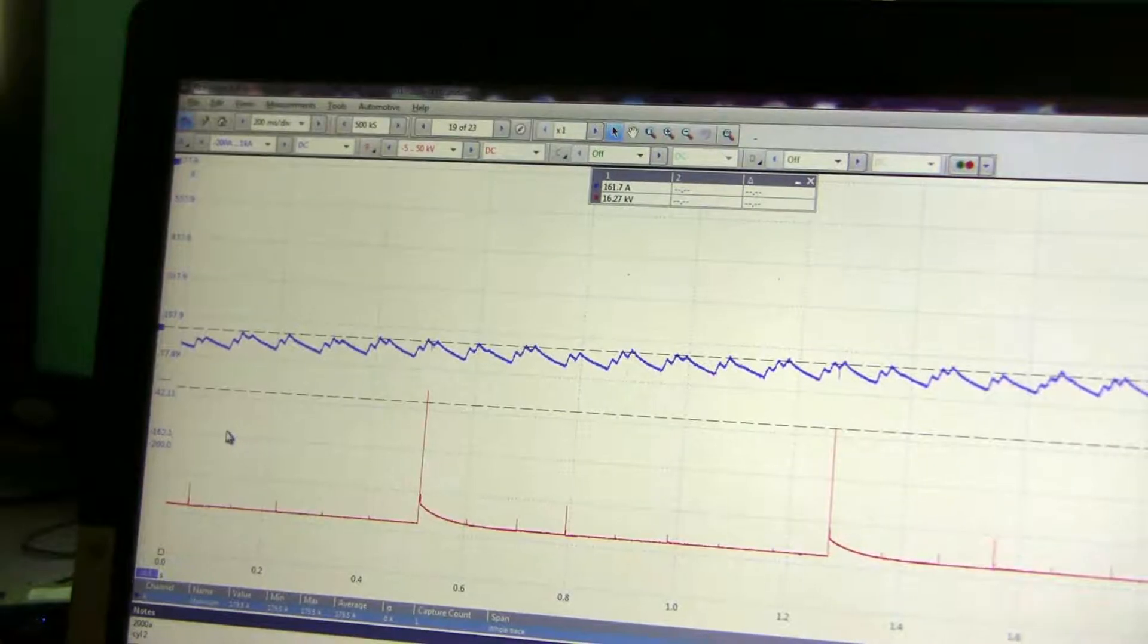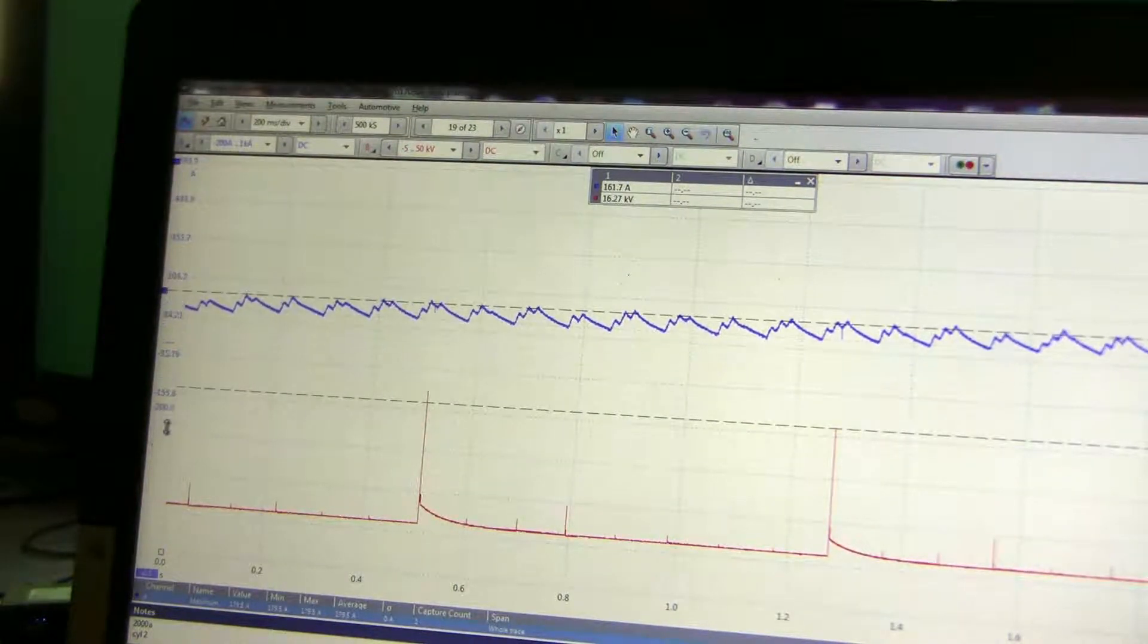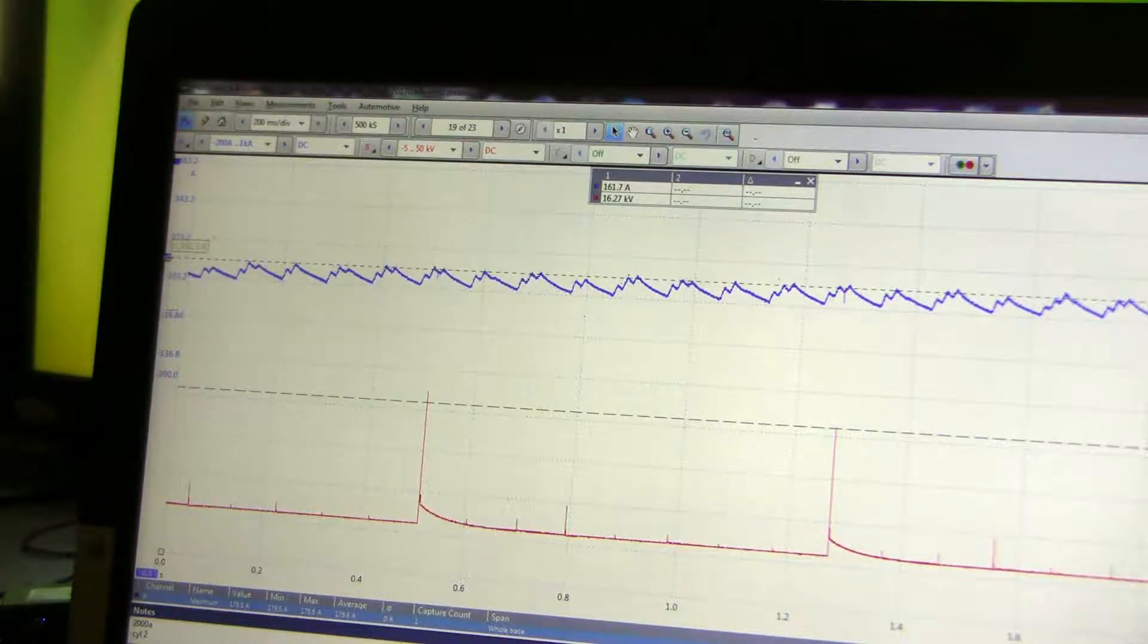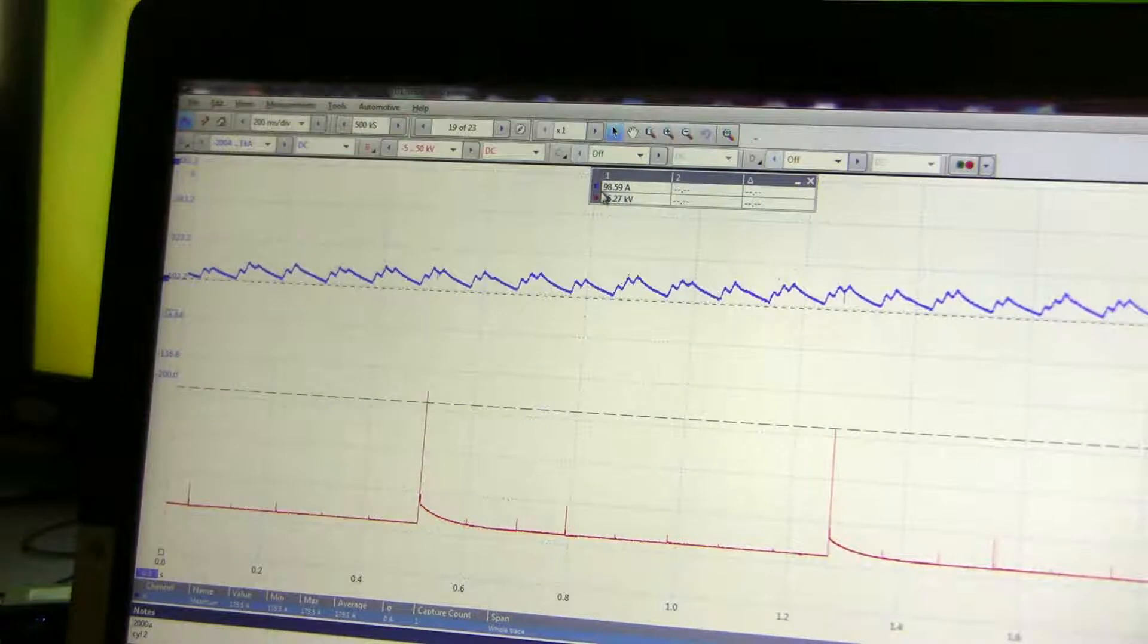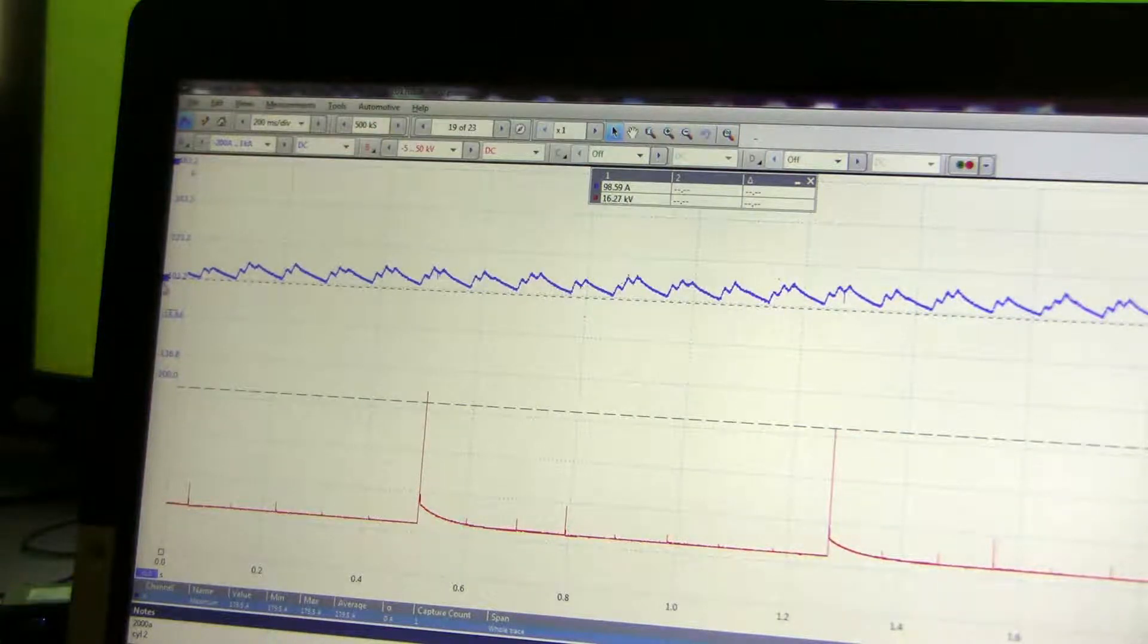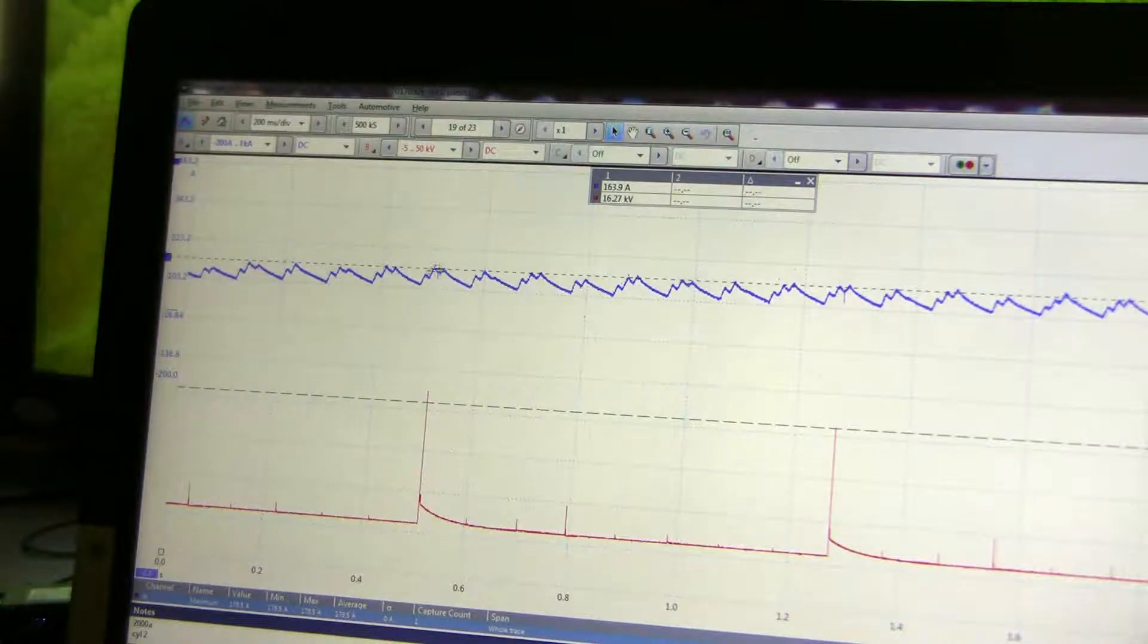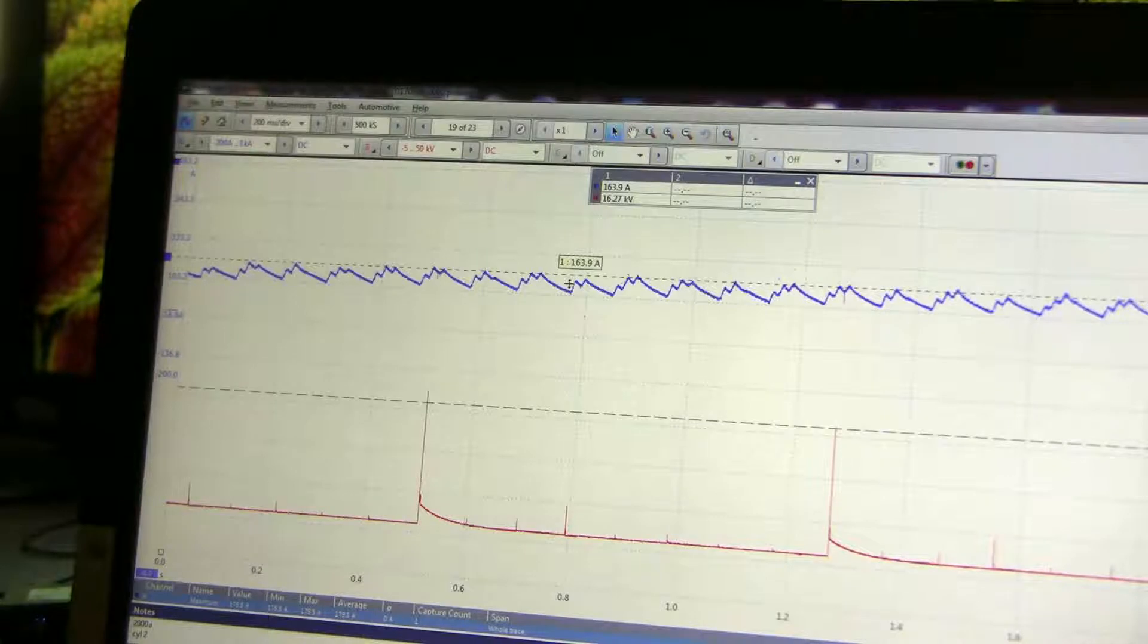Alright, well the nice thing about having the file up on a PC like this is that you can move it around and make it easier to see. And so I can move the whole scale up this way without changing the actual values. And I can actually even measure the values with this slider here. And so our readings are up here. This looks like the bottom amp draw is about 98 amps. And if we look up here, the peak draw at the top is about 163 amps at the top.